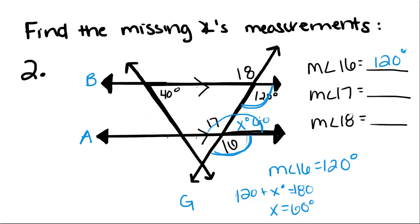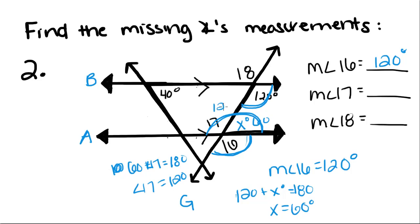Then, since angle X and angle 17 are also supplementary, we set 60 plus angle 17 equal to 180, giving us angle 17 equals 120 degrees. To find angle 18, lines B and A are parallel, cut by transversal Z. This angle has to be congruent to its corresponding angle, so the measure of angle 18 is 120 degrees.